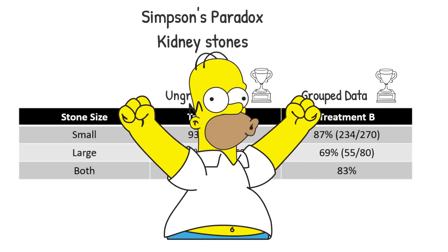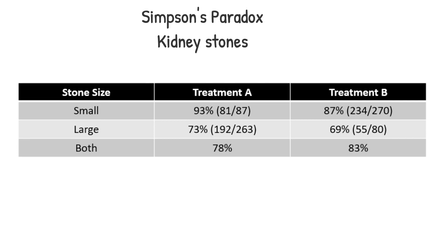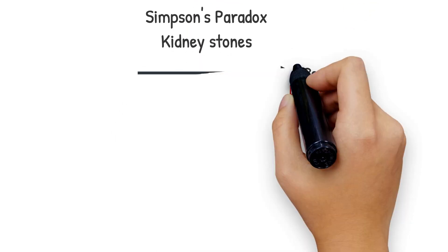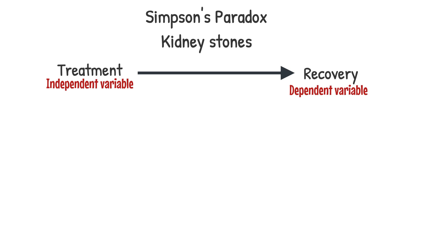Simpson's Paradox at play again. Looking carefully at the data, we can sense something is off. Most of the large kidney stone patients were directed to treatment A, and most of the small kidney stone patients were directed to treatment B. And as large stone cases are much more severe than small stone cases, the overall result was skewed in favor of treatment B, which was mainly tested on non-severe cases. Telling that recovery is only dependent on the treatment is totally unfair, because this ignores the stone size variable in between.